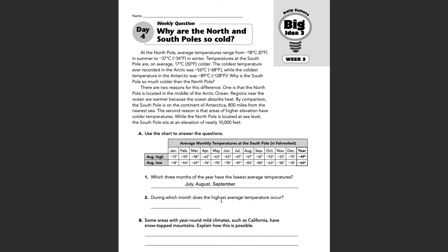During which month does the highest average temperature occur? As we scan through the data table, it looks like it would be January — negative 13, negative 18 — much lower than the majority of these temperatures. The closest one would be December, but it looks like January has the highest temperature.